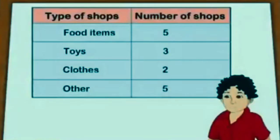Vishal made two columns. He wrote in one column 'types of shops' and in another column 'number of shops.' The first shop type is food items, and the total number of those shops is five.